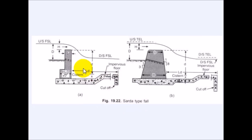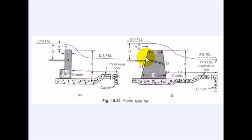For the Sarda type fall, two types of crests can be provided: a rectangular crest and a trapezoidal crest. If the discharge is less than 14 cubic meters per second, a rectangular crest is provided. If the discharge is greater than 14 cubic meters per second, a trapezoidal crest is provided. The faces of the trapezoidal crest are 1:3 upstream and 1:8 downstream. Cutoff walls are provided both upstream and downstream.